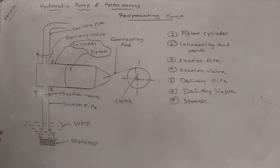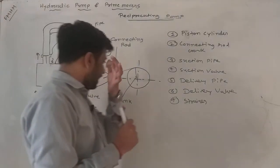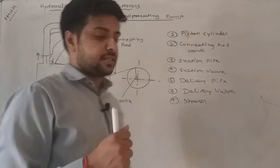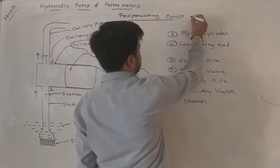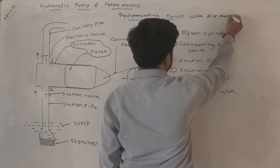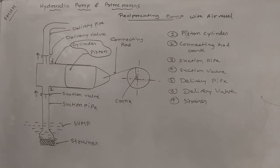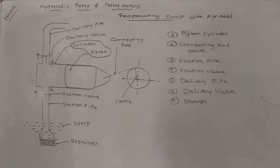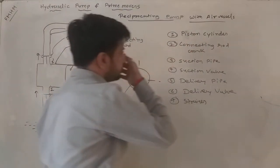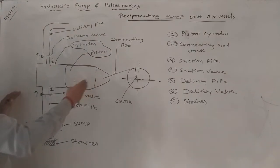This covers the reciprocating pump construction and working. Now we look at the reciprocating pump with an air vessel. In a simple reciprocating pump, there is a suction pipe, delivery valve, and piston cylinder. With the air vessel version, two air vessels are added — the piston moves left and right and the fluid enters the air vessel.